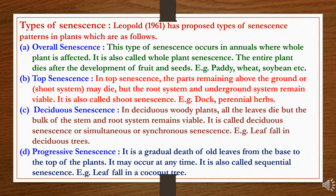The second type is top senescence. In top senescence, the parts remaining above the ground or shoot system may die, but the root system and underground system remain viable. It is also called shoot senescence, seen in dodder and perennial herbs.